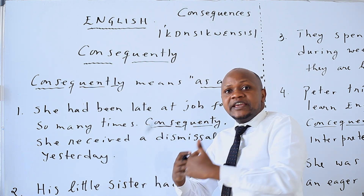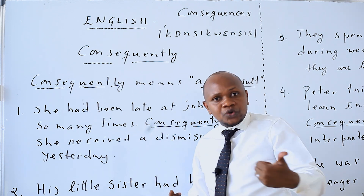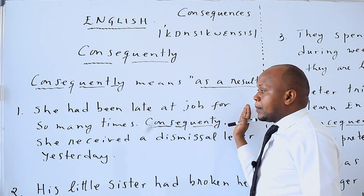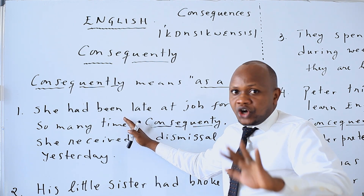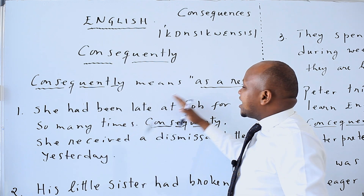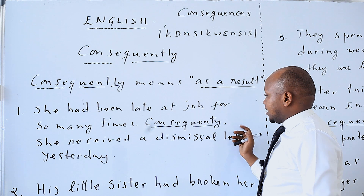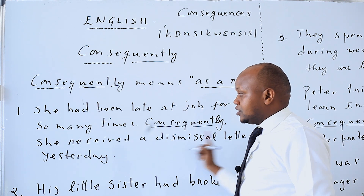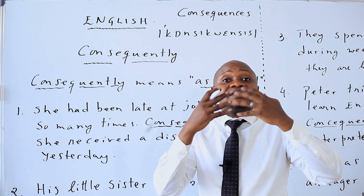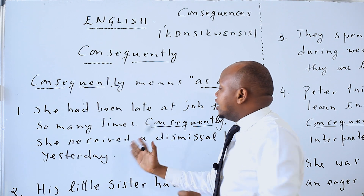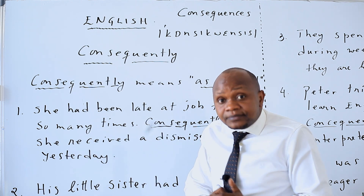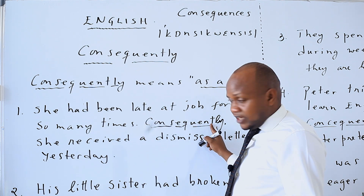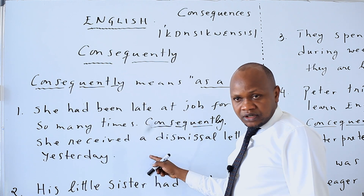I am going to give you so many examples in order to understand better how to use this conjunction 'consequently.' She had been late at job for so many times. Consequently, she received a dismissal letter yesterday.